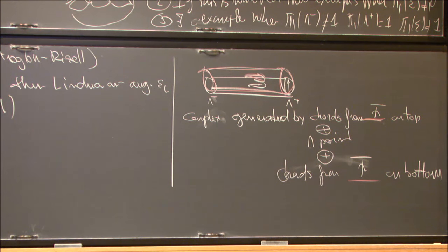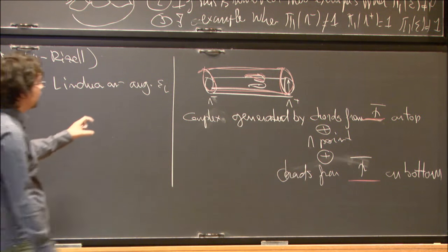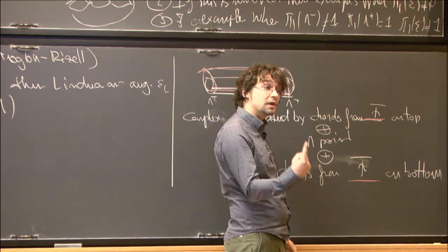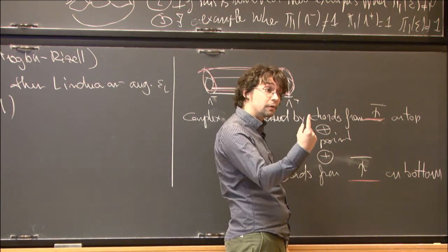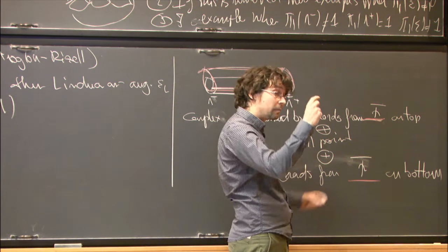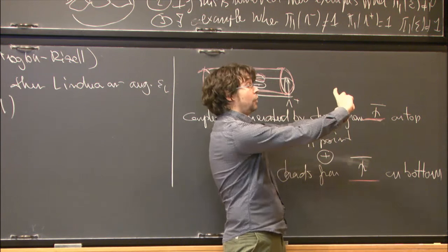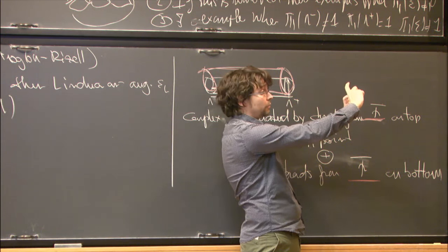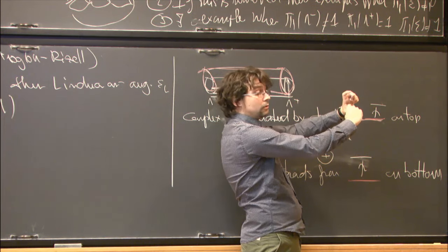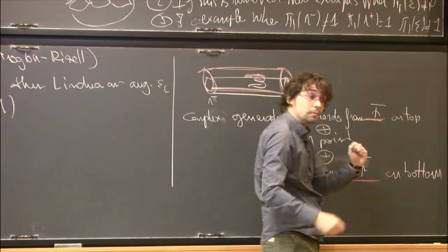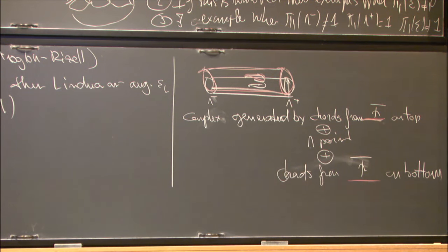To clarify 'chords on top or bottom': I take one cobordism and consider chords of the Legendrian manifold — Reeb trajectories starting and ending on the Legendrian. After making a small perturbation, I have two copies, and I look at chords starting on one copy and ending on the other. Top and bottom refers to λ⁺ and λ⁻ respectively.